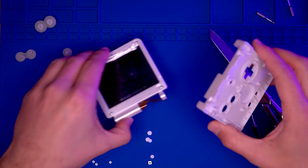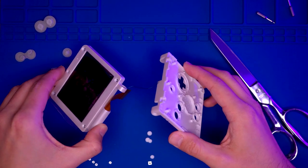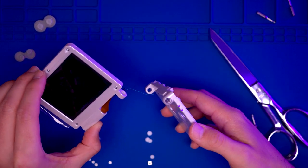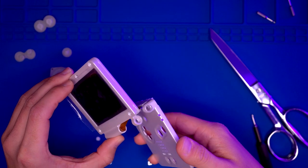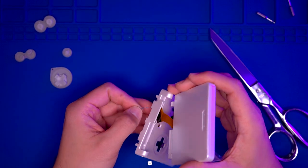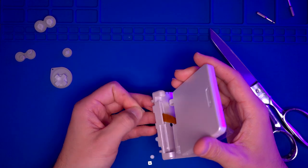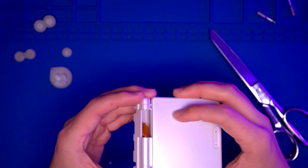Once that's done, we're going to attempt to attach the top part of the console to the bottom. We're going to feed the ribbon cable through to the bottom lower housing like so.